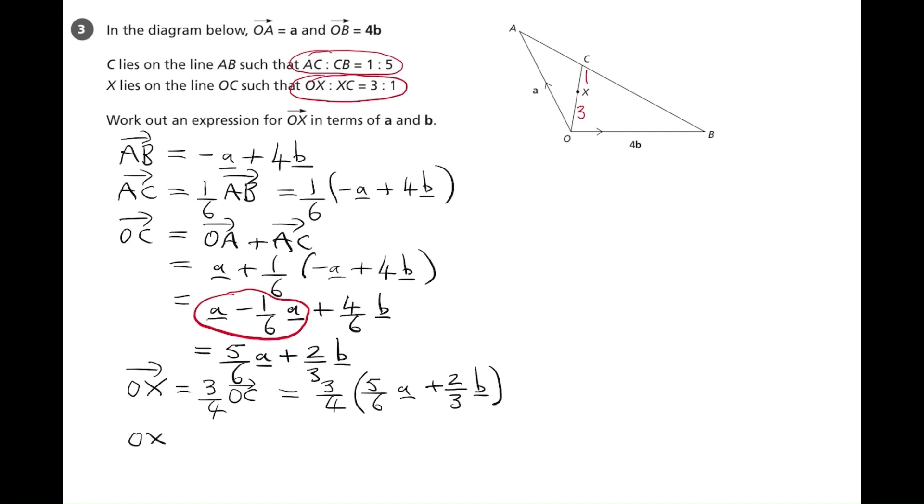So OX will equal, and if we multiply out three quarters by five over six, we'll get 15 over 24 lots of a. And then three quarters multiplied by two thirds, we'll get six over 12 lots of b. And when we cancel 15 and 24 by three, we'll get five over eight lots of a. And six over 12 is a half of b. And that is the vector OX.